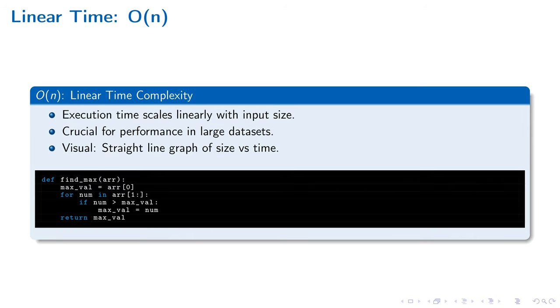Linear time complexity, designated as O(n), directly impacts algorithm performance with large datasets. The FindMax function iterates through an array once to find the maximum value, highlighting how operation count scales with array size.